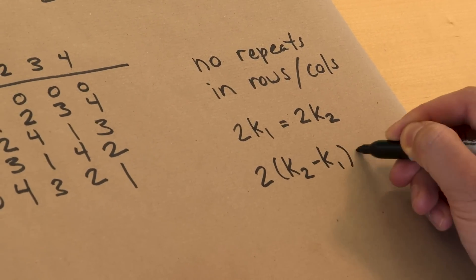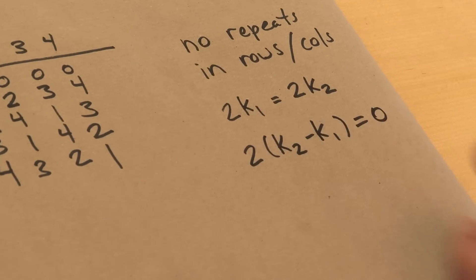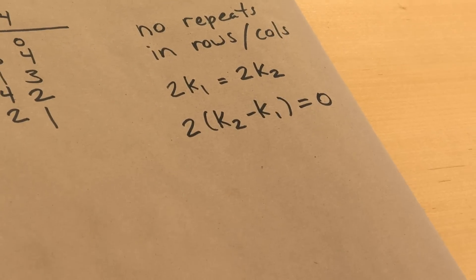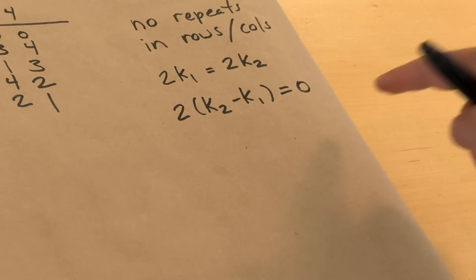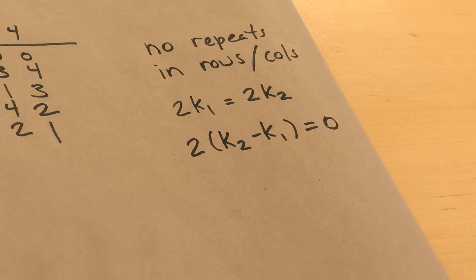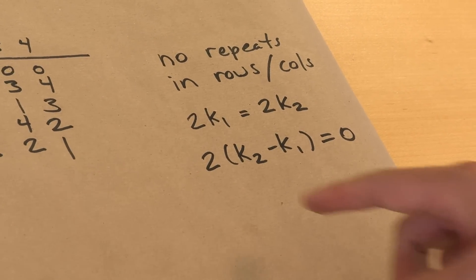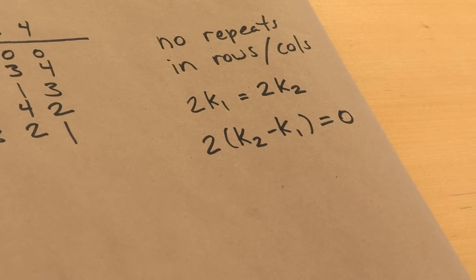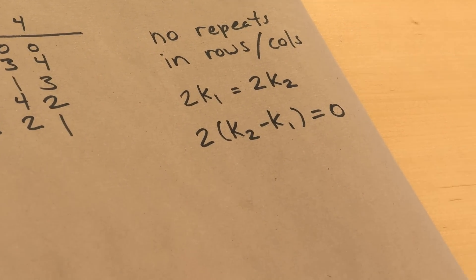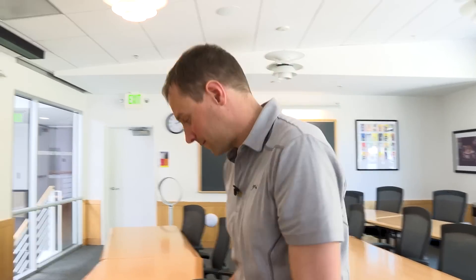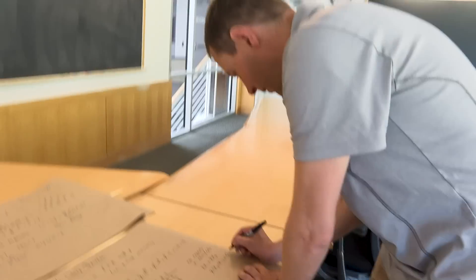So that means that P has to divide 2 times K2 minus K1. But again, both of those two numbers are going to be less than P. So P can't divide those. So it can't happen. So no dice, not allowed.